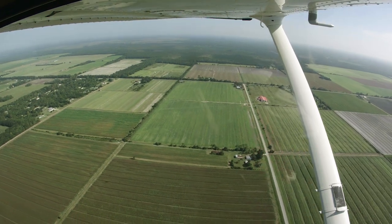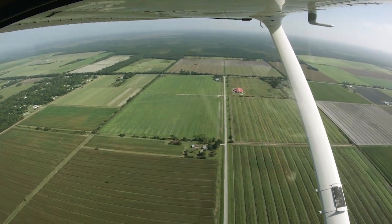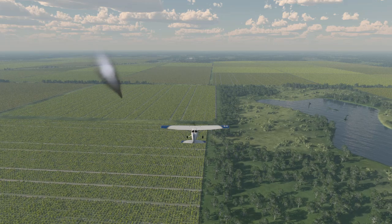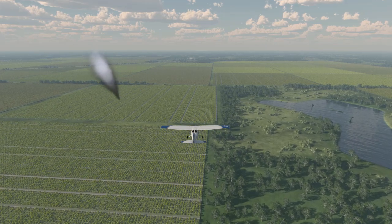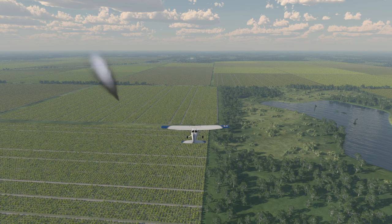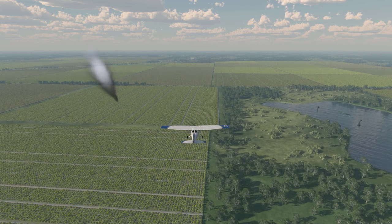To perform turns around a point, you must first determine the wind direction. Use visual references such as smoke, lakes, flags, or even a wind drift circle in order to accurately determine where the wind is coming from.